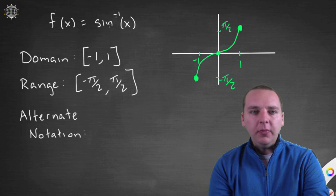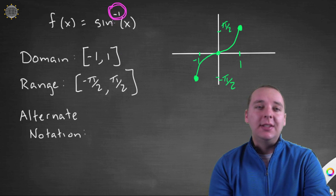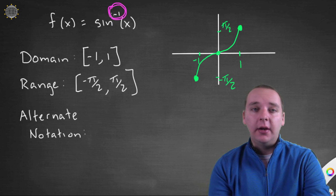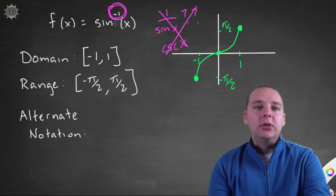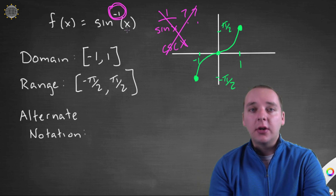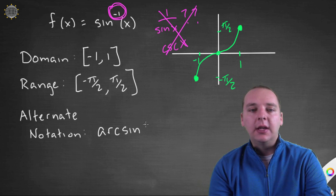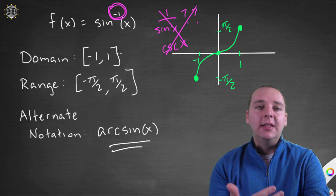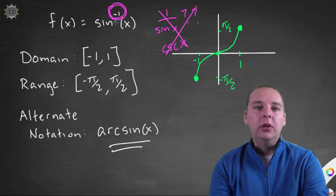One last thing about sine inverse: a student could look at the notation with the minus one and get confused, because that's where we usually put exponents — sine squared, sine cubed. Somebody might misinterpret this as one over sine x, but in fact this is not the cosecant function. To eliminate that confusion, a lot of students, instructors, and textbooks will instead write arc sine of x. These are identically the same thing — it's simply a change in notation that removes the confusion with the minus one looking like an exponent.